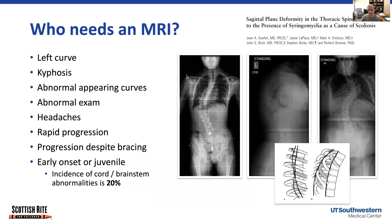Sometimes we decide that patients need an MRI to further assess their spinal cord and neural axis. We would do that if a patient has a left-sided curve, which is abnormal. We would also do this if a patient has more of a round back than expected — typically in regular idiopathic scoliosis the back is more flat than it should be due to the rotational part of the deformity. However, some patients present with a curve that has extra kyphosis or extra round back, and those are the patients we would consider an MRI on.